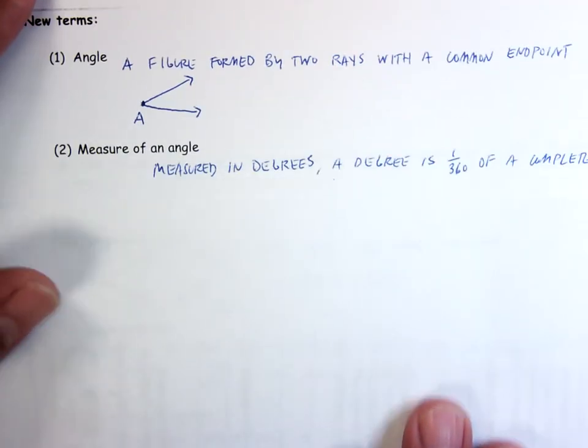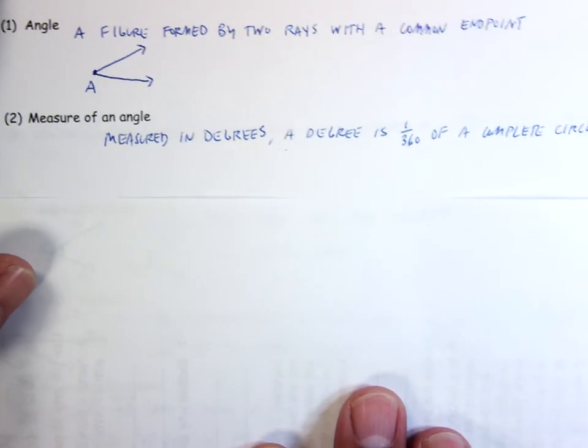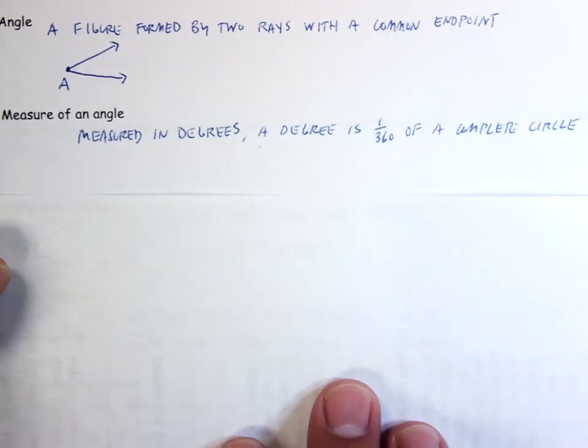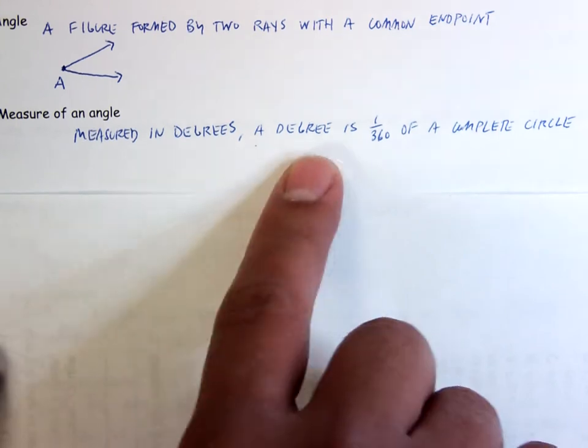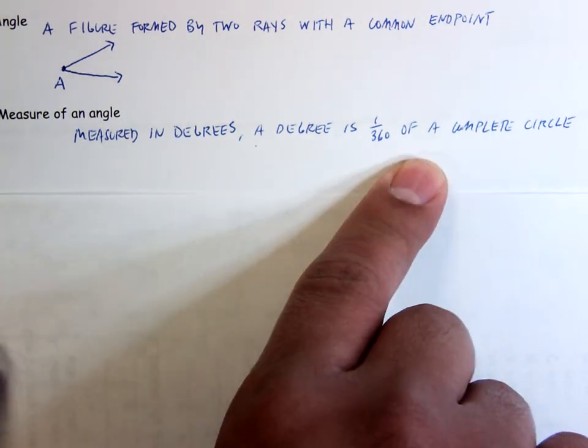If you need to pause to copy this down, go ahead. Measure of an angle - we measure angles in degrees. A degree is just 1/360th of a complete circle.